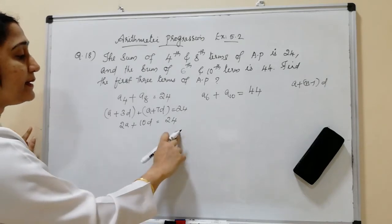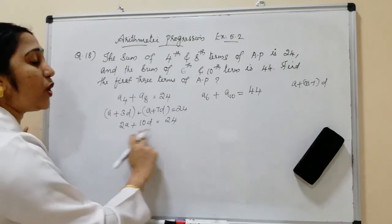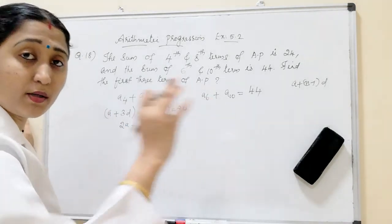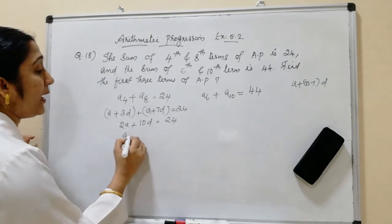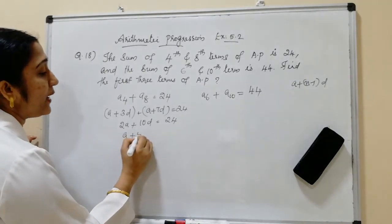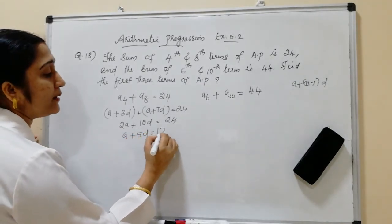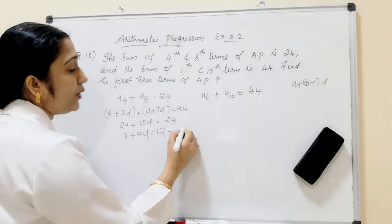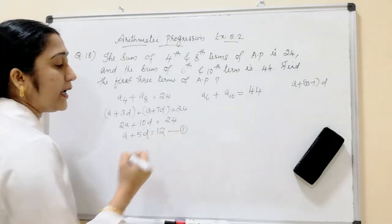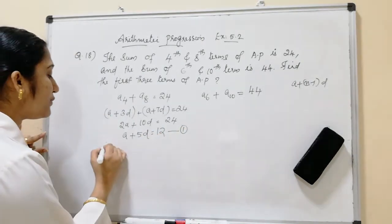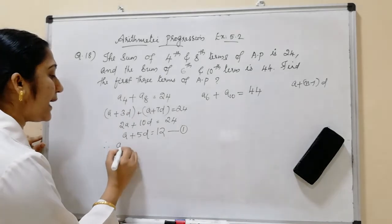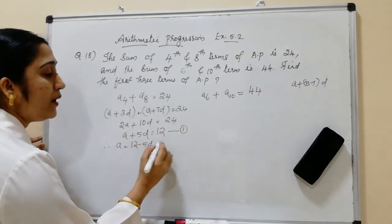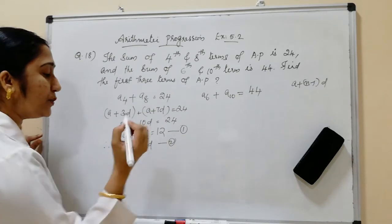Simplifying this equation: all terms are divisible by 2, so dividing both sides by 2 gives A plus 5D equals 12. This is equation number 1. From this we can write A equals 12 minus 5D. This is equation number 2.